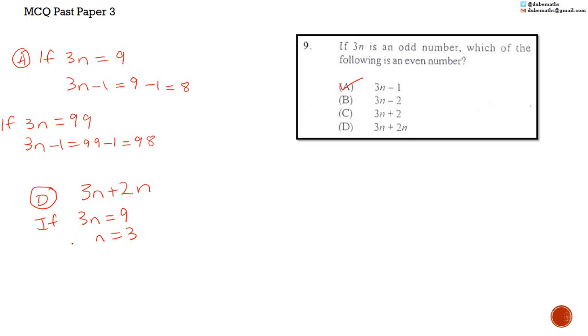So then, 3N plus 2N is equal to 3 multiplied by 3 plus 2 multiplied by 3, which is equal to 9 plus 6, which is equal to 15. If, on the other hand, 3N is equal to 99, then N has to be 33, because 3 multiplied by 33 is equal to 99.